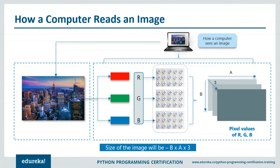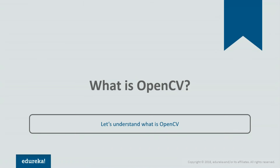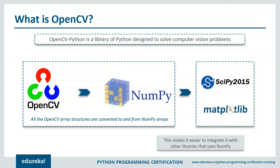To calculate the number of pixels, all you have to do is multiply the number of rows, number of columns, and number of channels. So if the size of the image is 700×700×3 because it's a colored image, multiply those numbers and you'll find the total number of pixels. Now let us move forward and focus on what exactly OpenCV is.